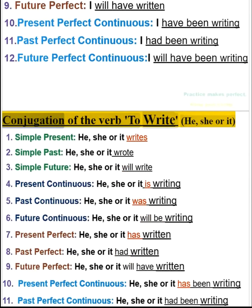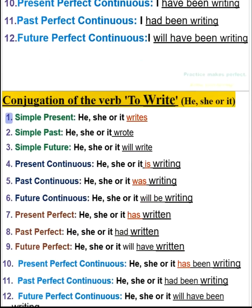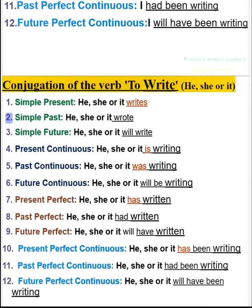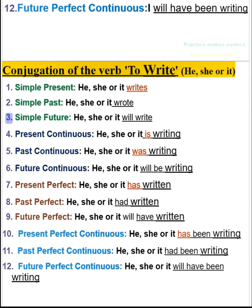Conjugation of the verb to write. He, she or it. 1. Simple present: he, she or it writes. 2. Simple past: he, she or it wrote. 3. Simple future: he, she or it will write.